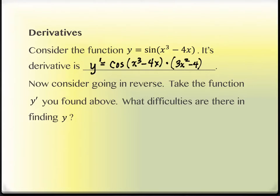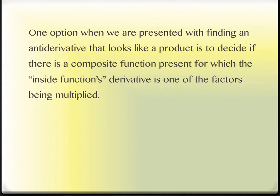There's just a bunch of different types of techniques that you can try, and this is the first of those techniques. If it looks like a product and we can identify that there's a composite function — something that looks like it came from a chain rule — then we're able to identify the inside function and outside function being multiplied. If we can do that, we can put together something called a substitution.